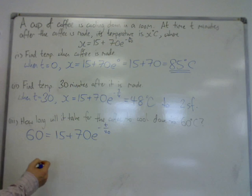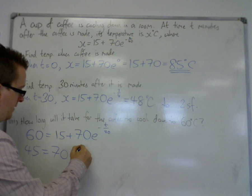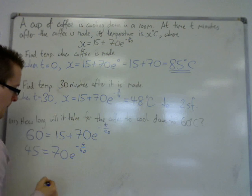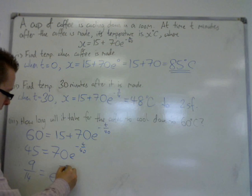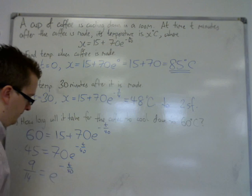If I take 15 from both sides, we get 45 is 70 e to the minus t over 40. Then if I divide both sides by 70, we get 9 fourteenths is e to the minus t over 40.